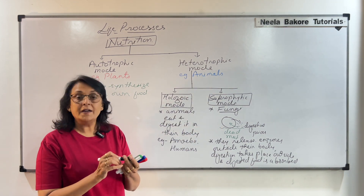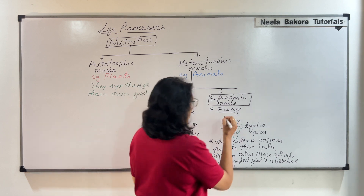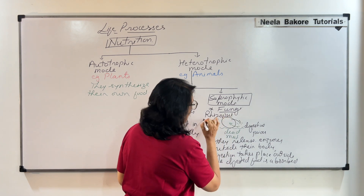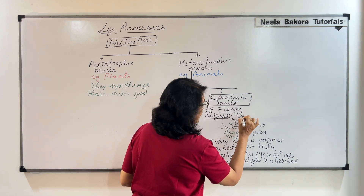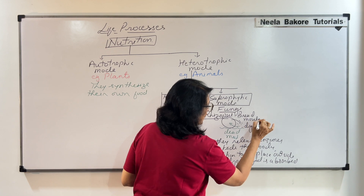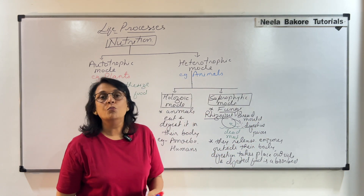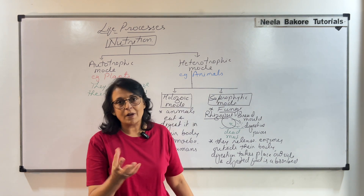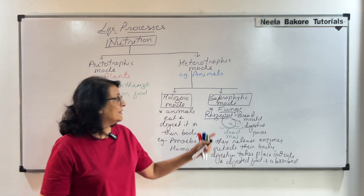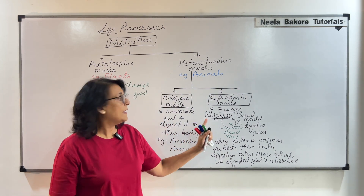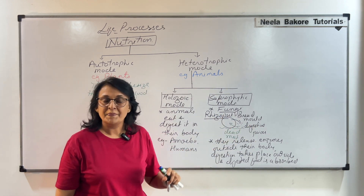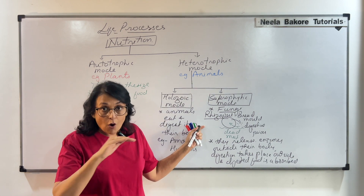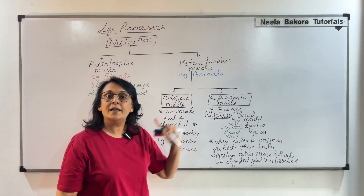This mode seen in fungi is known as saprophytic mode. An example of fungi is Rhizopus, commonly known as bread mold. If a piece of bread is left outside for a longer period of time, a thread-like fungus grows on it — that is Rhizopus. It releases enzymes on the bread, digestion takes place on the bread, and the digested material is absorbed.